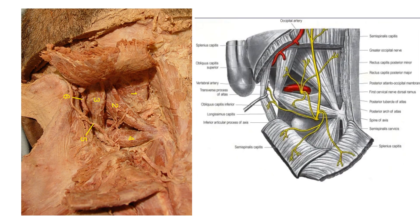The suboccipital triangle is a paired musculoskeletal triangle situated on each side of the midline, in the suboccipital region. Here is the occipital bone, and below is the suboccipital region where this triangle is located.